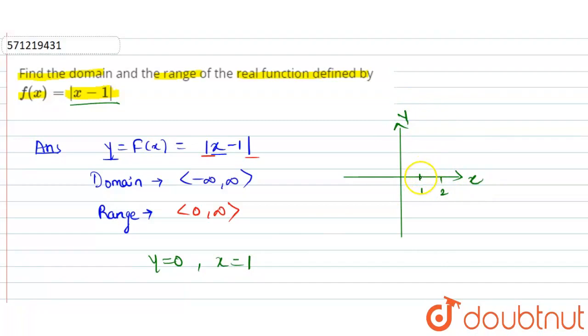Here, it will be 2. So, it will form somewhat like this. Like this, it will form. It will be a straight line.